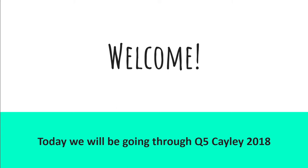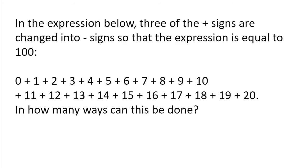Welcome. Today we will be going through question 5 of the Cayley Olympiad 2018. In the expression below, three of the plus signs are changed into minus signs so that the expression is equal to 100. In how many ways can this be done?